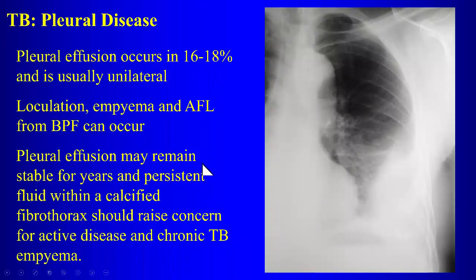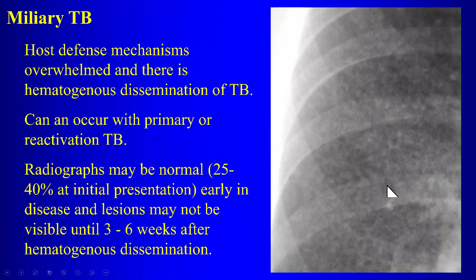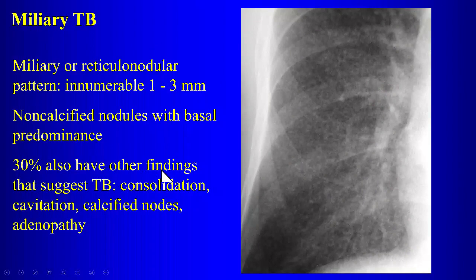Miliary TB shows very tiny nodules from hematogenous dissemination. People can walk around with miliary TB — they are not necessarily very sick. If you see a chest x-ray with these tiny small nodules, make sure you think about miliary TB and call the clinician. Initially radiographs may be normal; lesions may not be visible until three to six weeks after hematogenous dissemination.